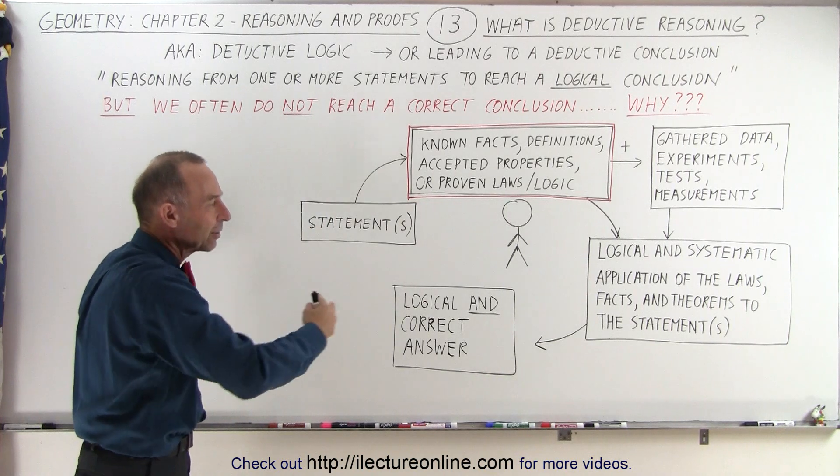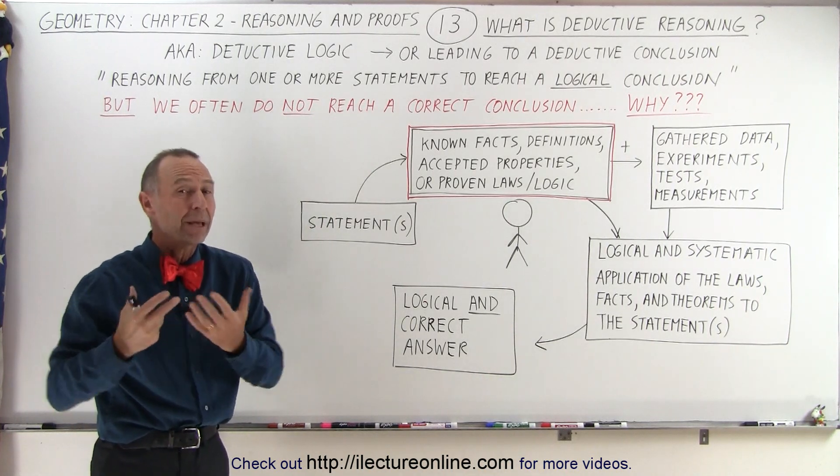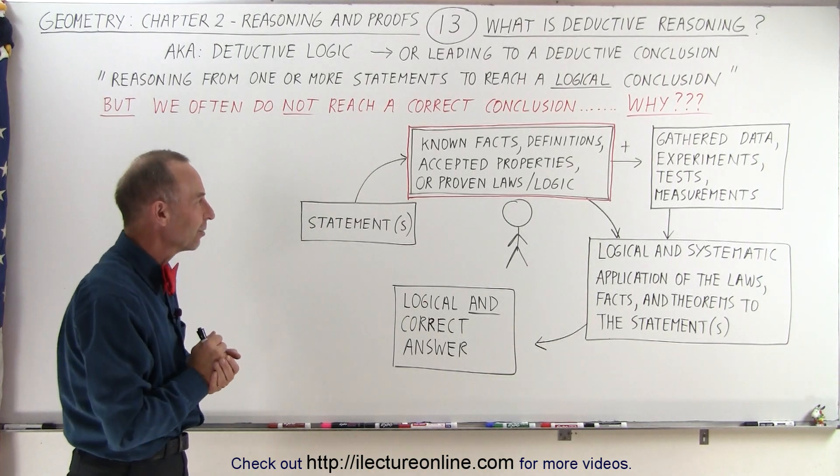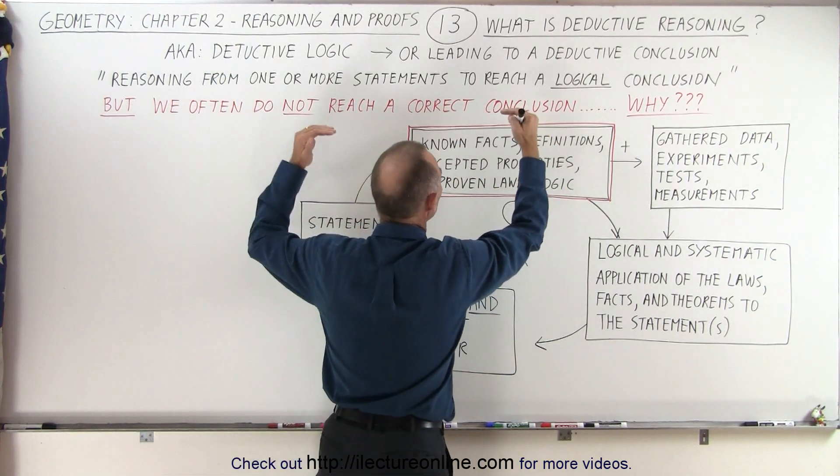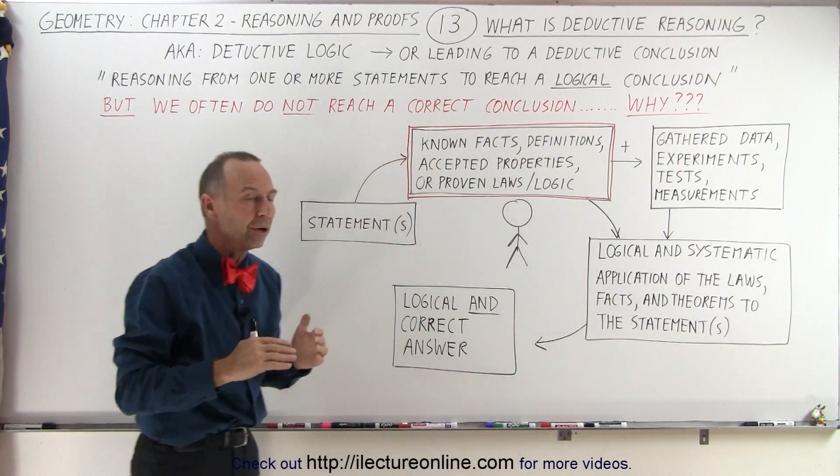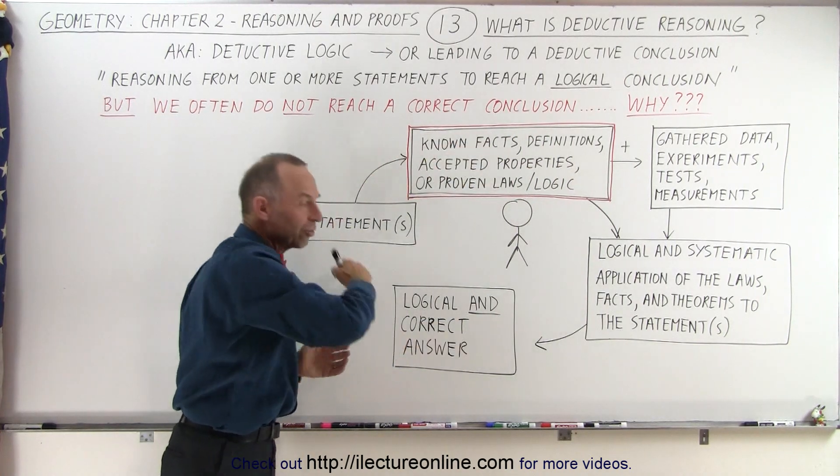So here, this diagram here really explains a little bit better what deductive reasoning is. And this box right here that's marked in red is the most important part of the whole process of deductive reasoning.